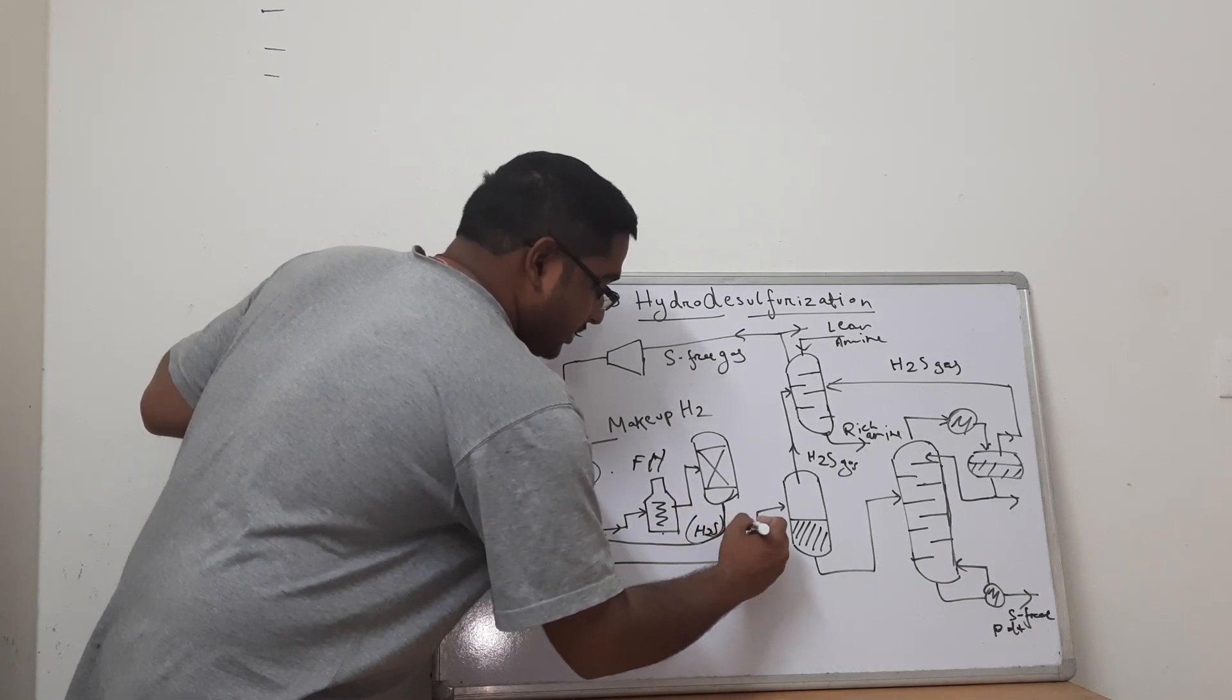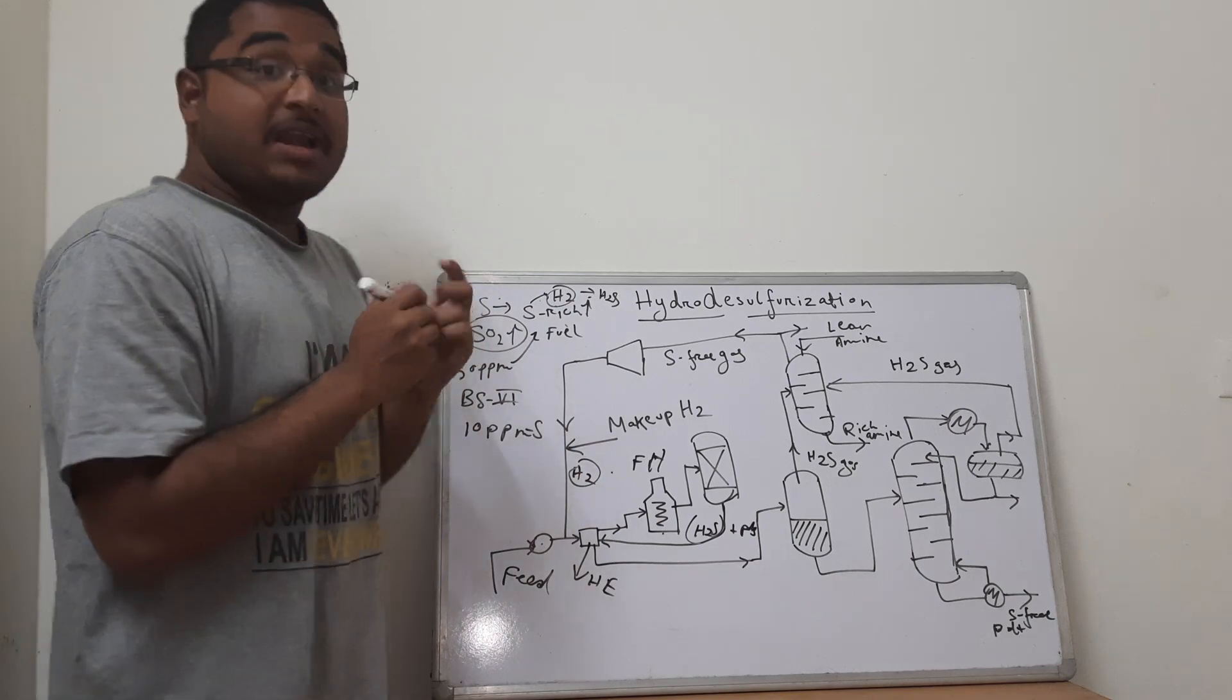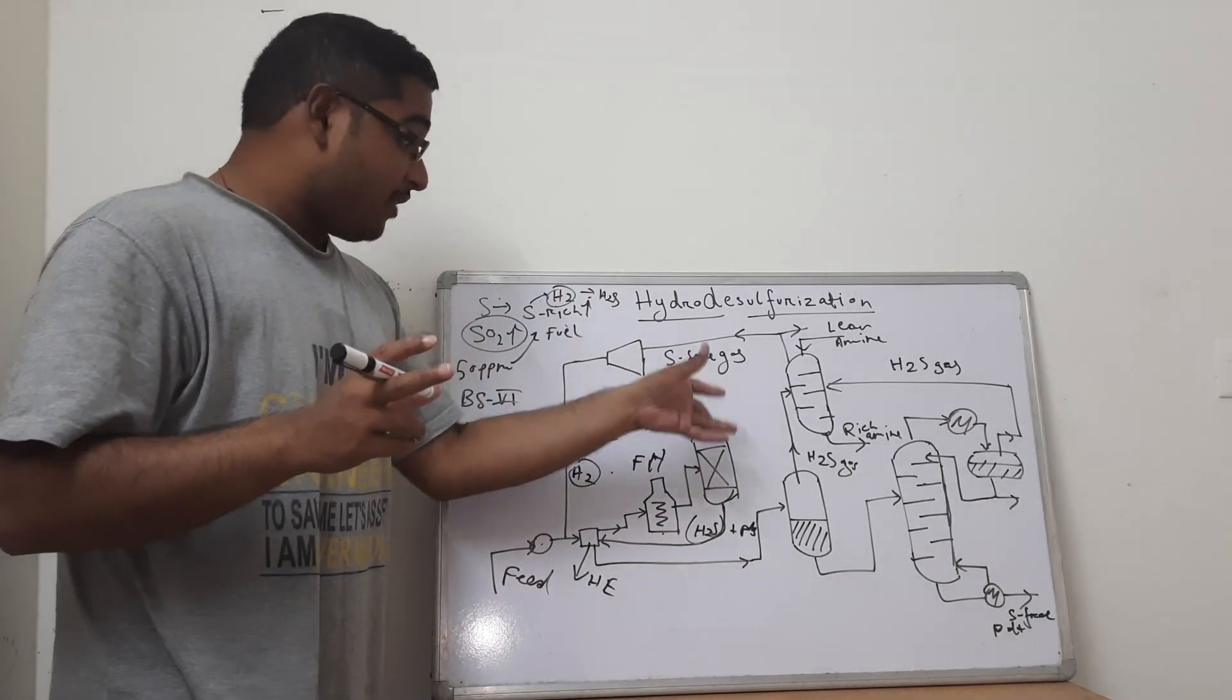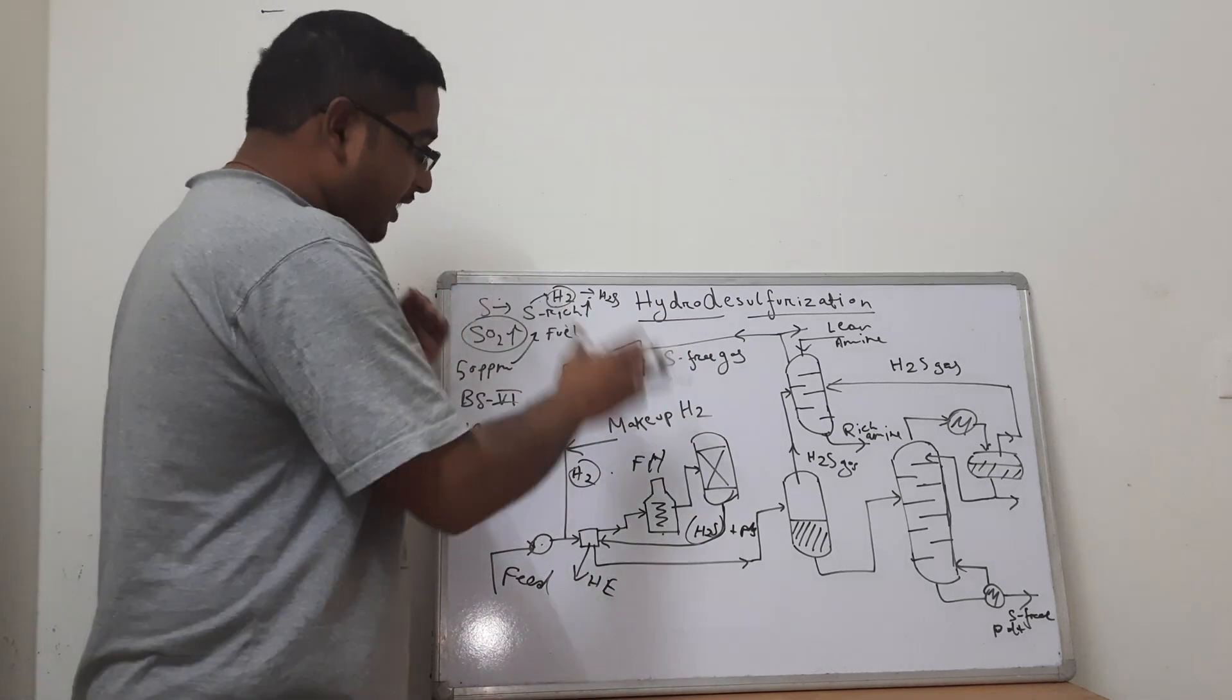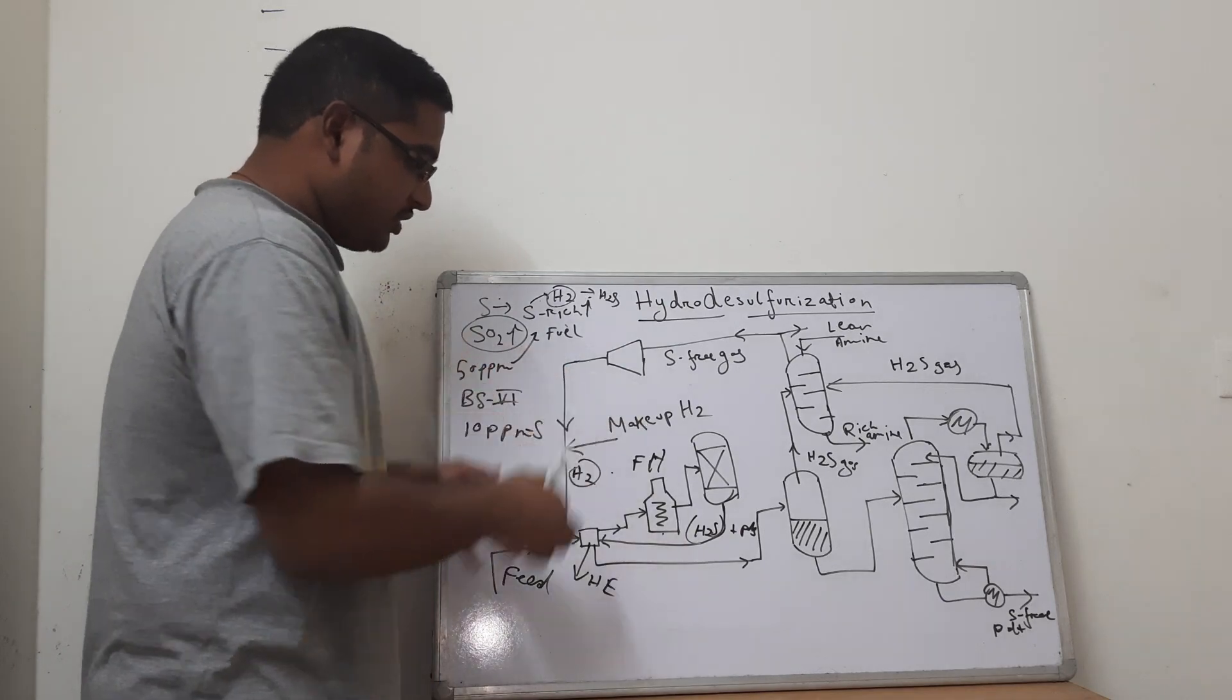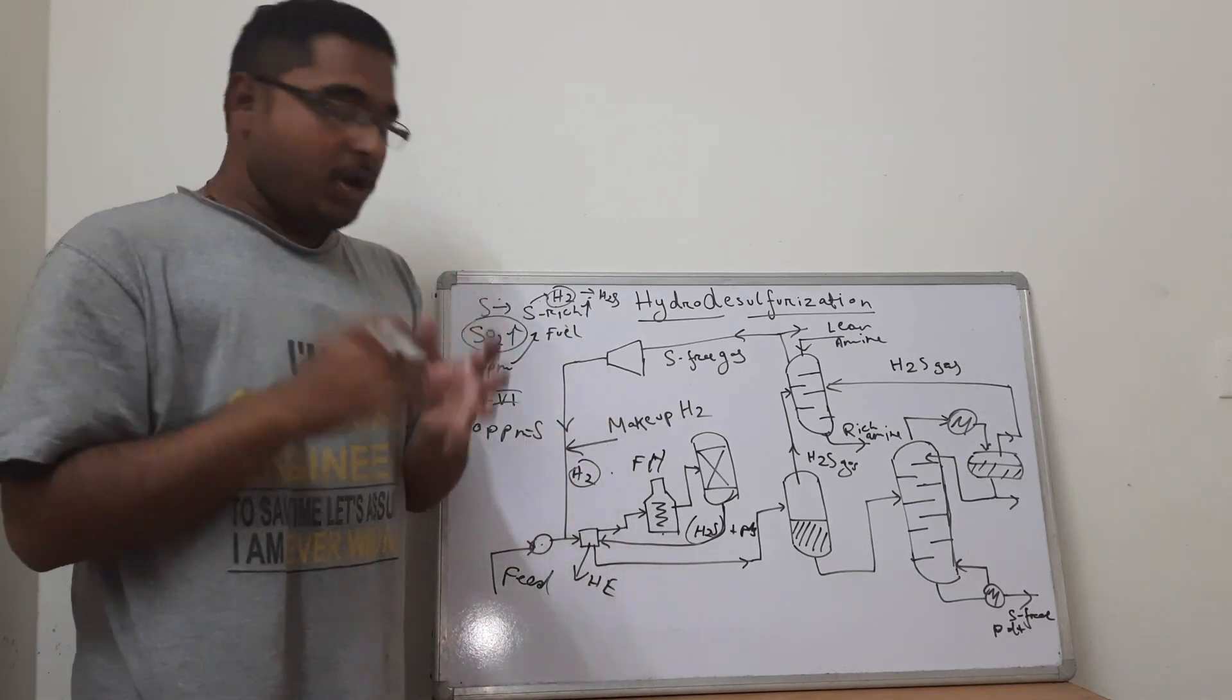And some products, other side products are being formed that is sulfur-free. So now we need to remove this H2S from this particular product from the reactor. We have converted all the sulfur into hydrogen sulfide. But how to remove this hydrogen sulfide from the product stream?